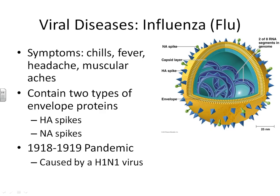Influenza is an enveloped RNA virus, and the envelope itself has many different spikes. The two most important spikes are called the HA spike and the NA spike. The H spikes and N spikes are different depending on which species the flu is going to infect. Every year, a vaccination is made against the human influenza strain humans are going to encounter — something like H3N2, or maybe next year H2N2.